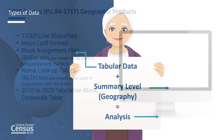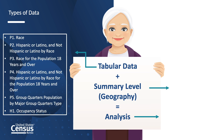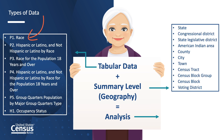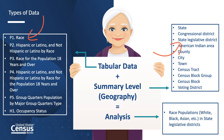When you select a topic such as race from the P1 race data table and a geography such as a state legislative district, you will discover the population count of the race iterations in that state legislative district. Analyzing these data is how redistricting officials make decisions about how to delineate their districts.